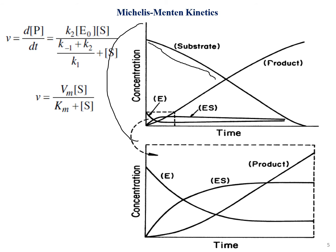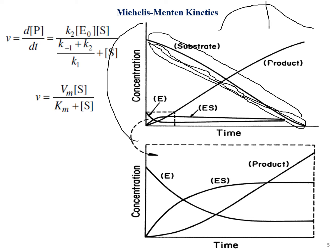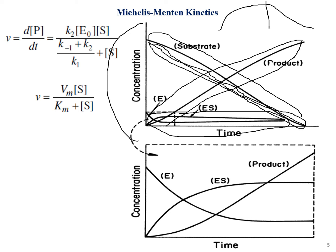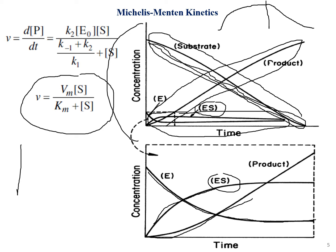In this graph, as substrate gets degraded over time, the product gets raised. The substrate concentration decreases after reaching the saturation point, while the product concentration increases. There is a crossover point where the enzyme-substrate complex combines to form product — this is where the substrate curve and product curve intersect.